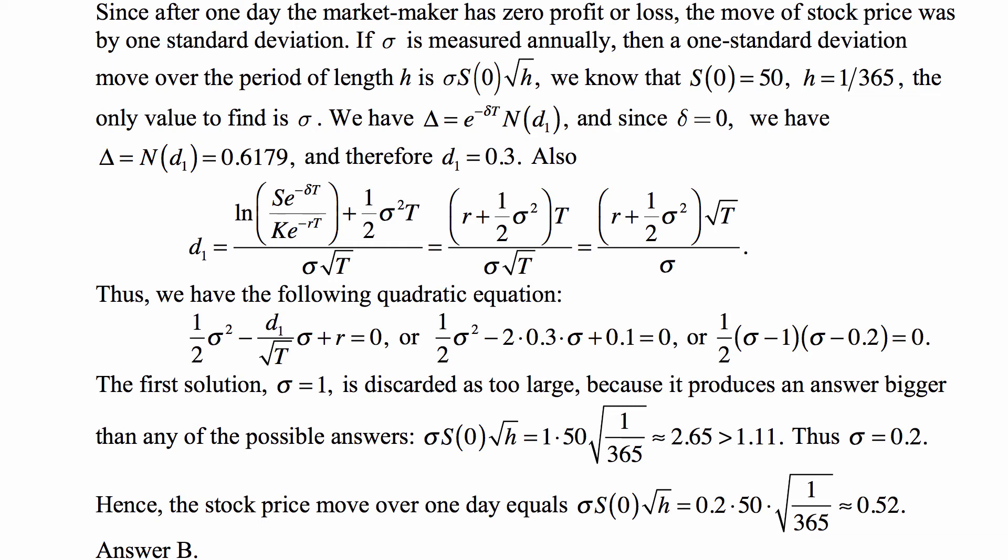And of course, at this point, you can cancel out t divided by square root of t is just square root of t. So what we end up with is (r + 1/2 σ²)√t over σ. And therefore, we have this treated as an equation, becomes 1/2 σ² - d1/√t σ + r = 0.